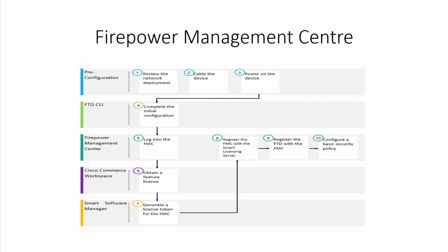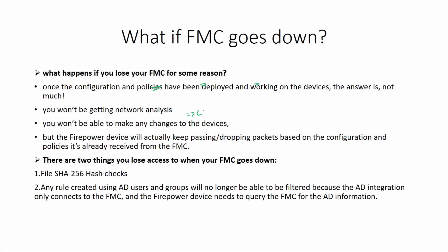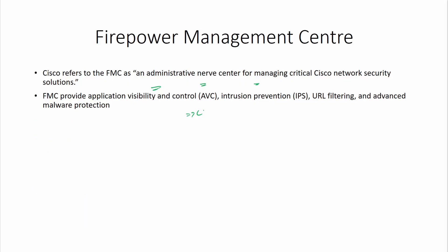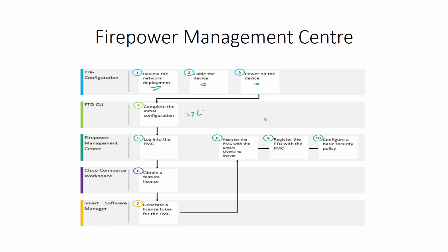Now let's look at the FMC setup process. When you purchase a new FMC device, you review your network, plug in the cable, and power on the device. After that, you complete your initial configuration via CLI. At this step, you provide your IP address, default gateway, and DNS server — all that information is entered here.